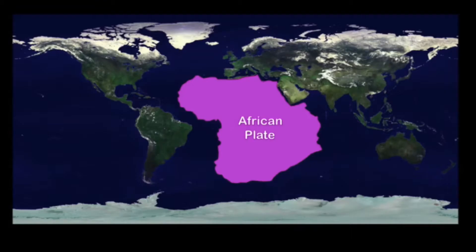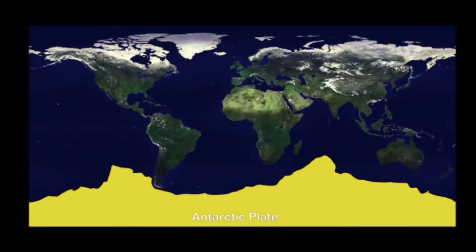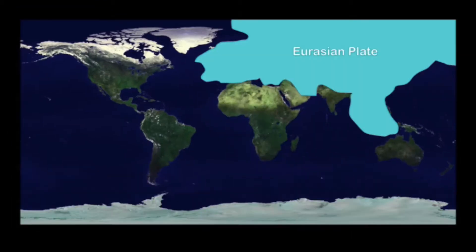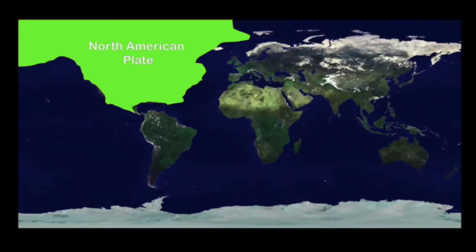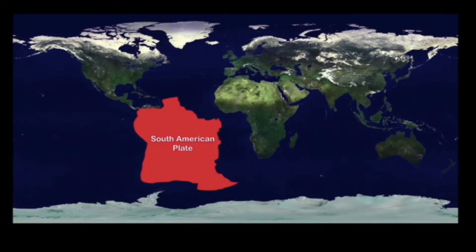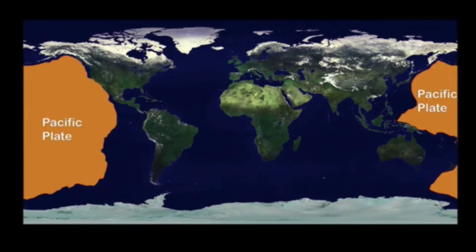The major tectonic plates are the African, Antarctic, Euro-Asian, Indo-Australian, North American, South American, and Pacific. These plates float around the asthenosphere, the layer right under the lithosphere.